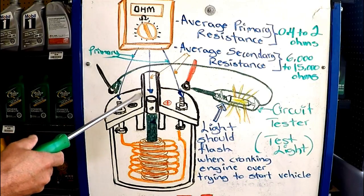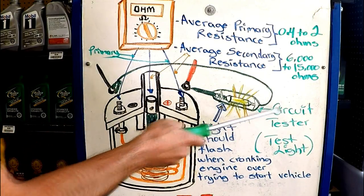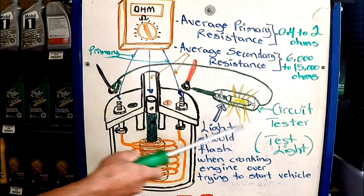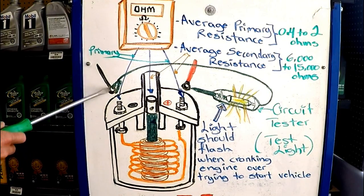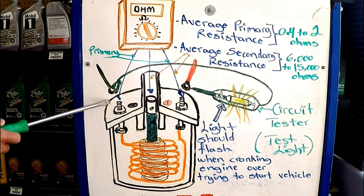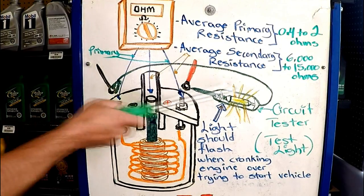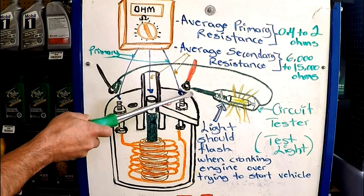Now another very helpful and simple test that can be done: you use a circuit tester which is also called a test light. And what you do, you connect the negative to the negative cable, still disconnected. It can be connected, that way nothing interferes. And you touch the positive with the probe.